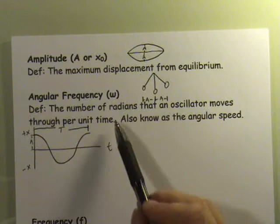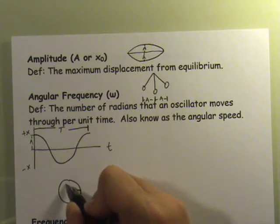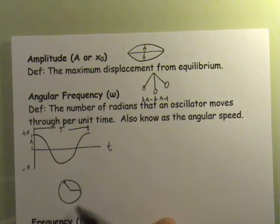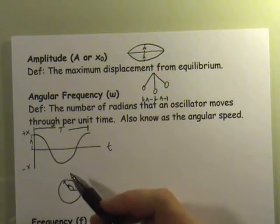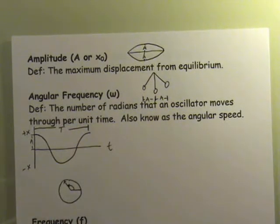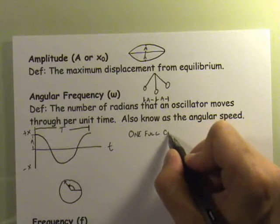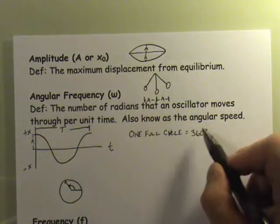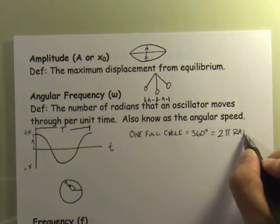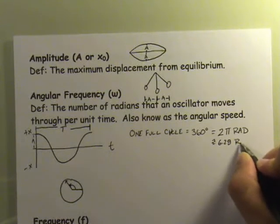So how does this relate to radians? If you think about circular motion — imagine an arm swinging around at some speed — over some period of time, some angle will be swept out. Every second, this arm will swing out some number of radians. For one full cycle, in degrees that would be 360 degrees, but measured in radians that would be 2π radians, or approximately 6.28 radians.